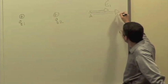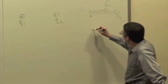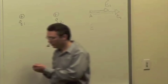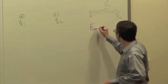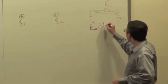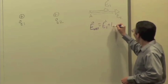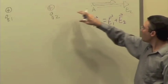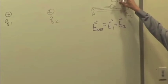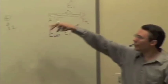And charge two would make an electric field at this location, also pointing in the same direction, maybe a larger field because it's closer, and that's E2. And then that electric field would be just the vector sum of those.